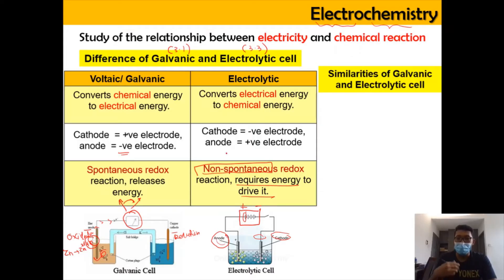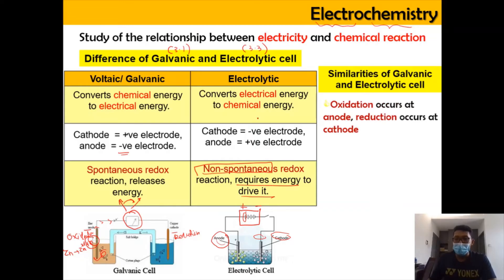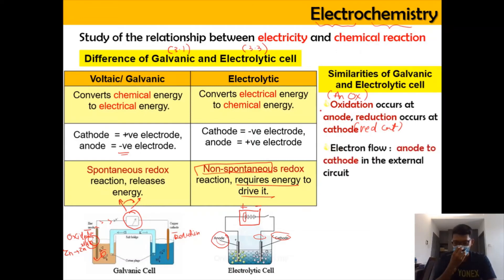Despite the differences, there are also similarities. The first similarity is that oxidation will still occur at anode and reduction will still occur at cathode — remember 'An-Ox' and 'Red Cat.' For the electron flow, it always occurs from anode to cathode in both types of cells.